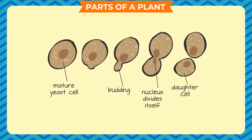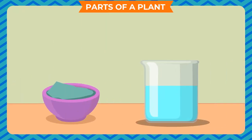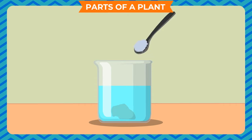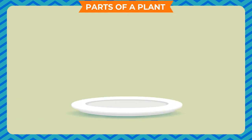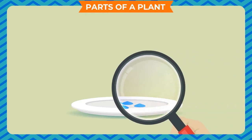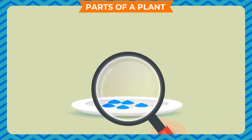To observe budding in yeast: Take some yeast powder from a bakery or chemist shop. Place a pinch of yeast powder in a 100 milliliter beaker with some lukewarm water. Add a spoonful of sugar and shake it well to dissolve. After an hour or so, put a drop of this liquid on a glass slide and observe it under a microscope. You will see the formation of new yeast cells.